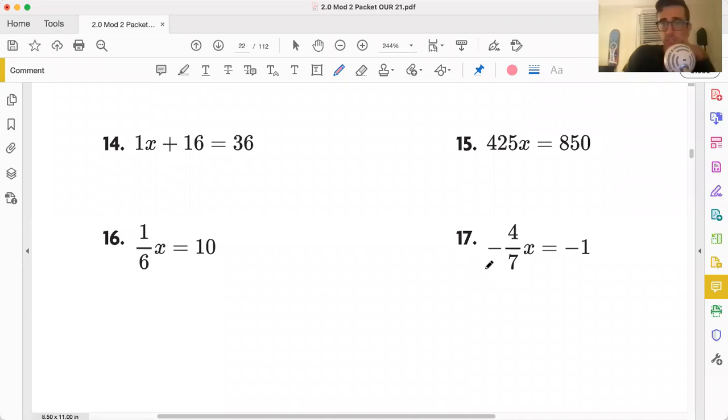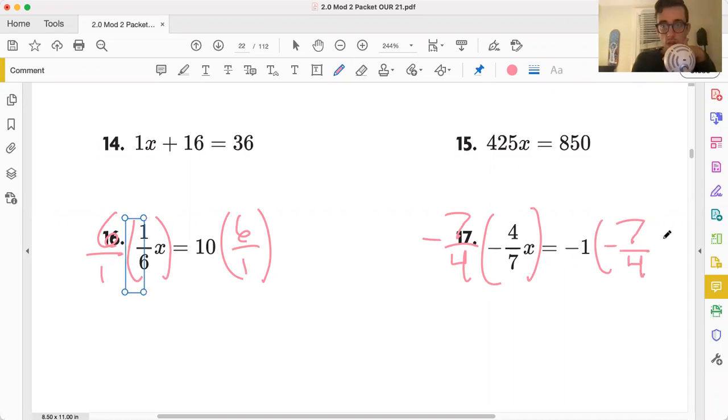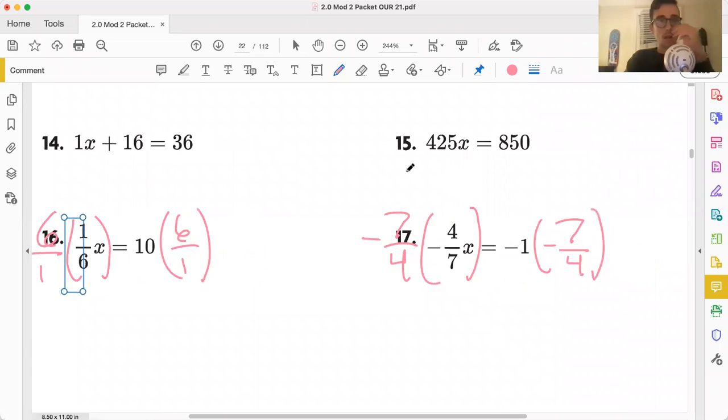All right. So 15, 16, and 17, you've done problems like that before. Just think opposites with this. Think reciprocals. Flip that fraction upside down and multiply. Same here. Flip the fraction upside down and multiply. You can do it.